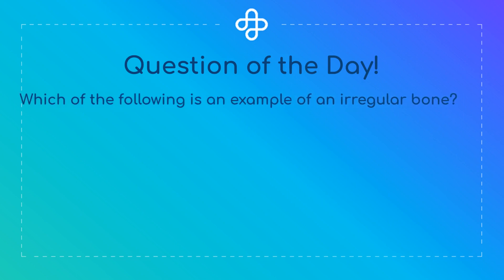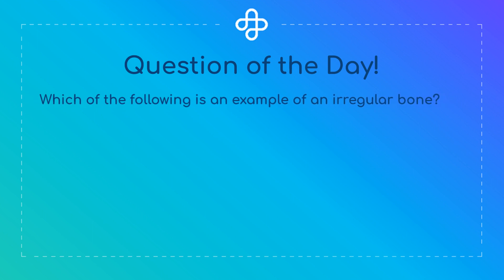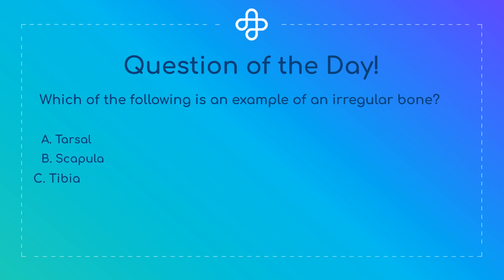Which of the following is an example of an irregular bone? Is it A. Tarsal, B. Scapula, C. Tibia, or D. Mandible?